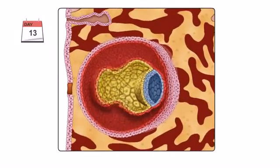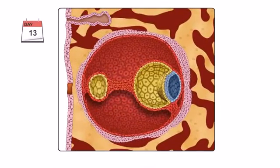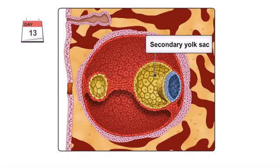Around 13 days after fertilization, a large portion of the exocylomic cavity is pinched off, forming a smaller cavity, the secondary yolk sac.